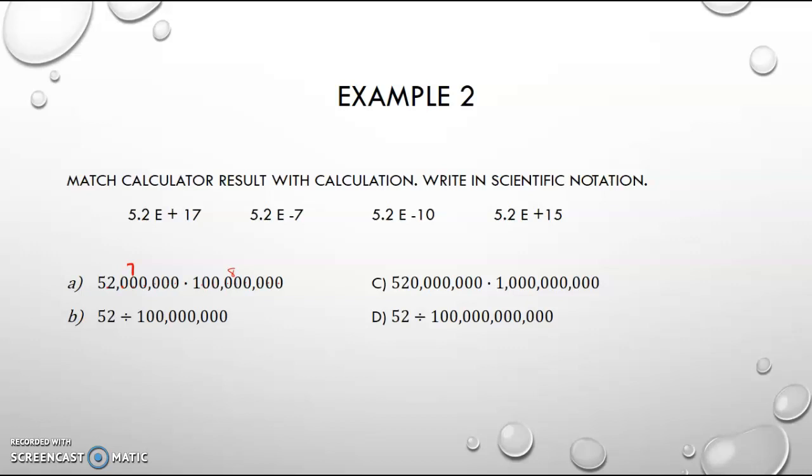And 7 plus 8 is 15, right? That means that there are 15 decimal moves or technically 14 zeros behind the 2. And so this 5.2e plus 15, which is the same as 5.2 times 10 to the 15th, is our answer for A.